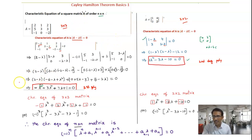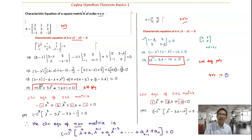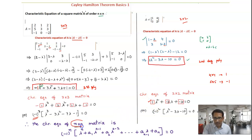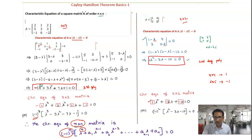The second point is the degree relates to the order. The third point concerns the leading coefficient: for a 3 by 3 matrix it is minus 1, but for a 2 by 2 matrix the leading coefficient is 1. For a 4 by 4 it is 1, and for a 5 by 5 it is minus 1. Therefore the leading coefficient alternates between plus 1 and minus 1, and is expressed as (minus 1) to the power n. So for an n by n matrix, the characteristic equation is an nth degree polynomial whose leading coefficient is (minus 1)^n.